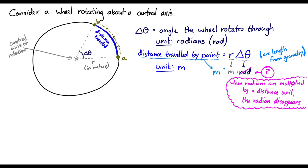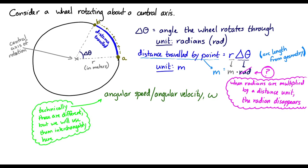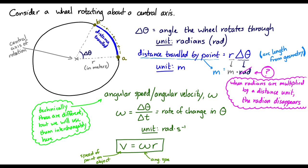Now, we're also going to think about angular speed or angular velocity, omega, which we've seen in the past. And technically, angular speed and angular velocity are different, but we're going to use them interchangeably in this course. And the angular speed is equal to the angle that's traveled through divided by the time that it takes. In other words, it's the rate of change in theta. The unit of the angular velocity is radians per second, and with a little bit of math, we could show that the speed of a point on a rotating object is equal to the angular speed times the radius out to that point.